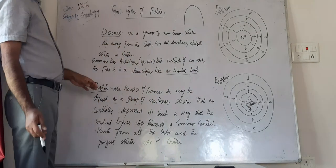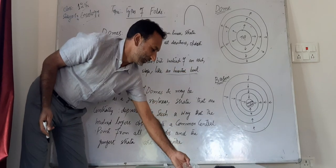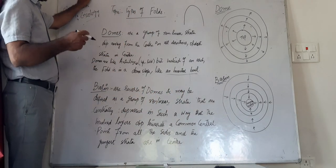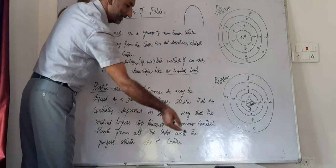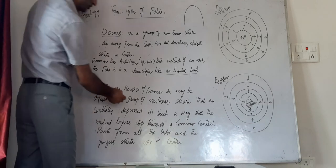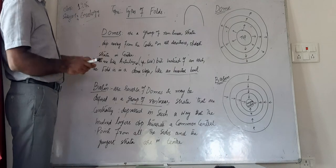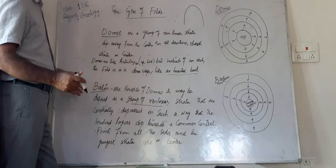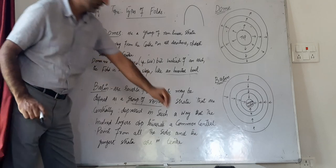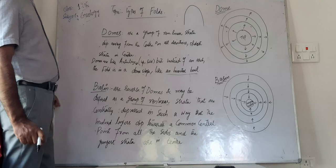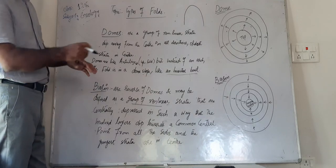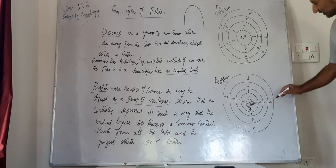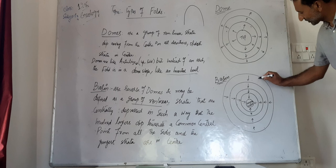Basin is the reverse of dome. When we take this bowl in its original shape position, basin is reverse of dome. It may be defined as a group of nonlinear rock strata that are centrally depressed in such a way that the inward layers have a dip going to the common center.